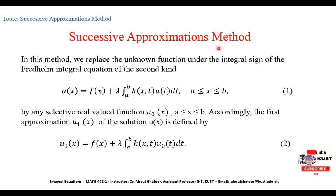Successive Approximations Method. Initially, we consider the Fredholm integral equation of second kind defined in equation 1, where k(x,t) is the separable kernel and u is the unknown function to be determined. In this method, we initially replace the unknown function under the integral sign, u(t), by any selected real-valued function u0(x), where x lies between a and b. This u0(x) is the initial or zeroth approximation, which we guess.